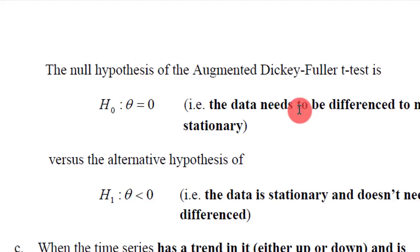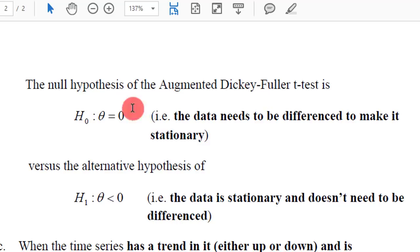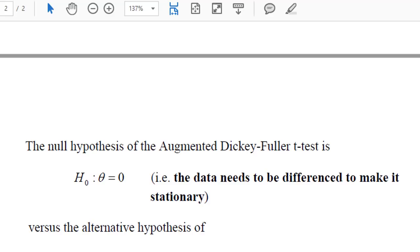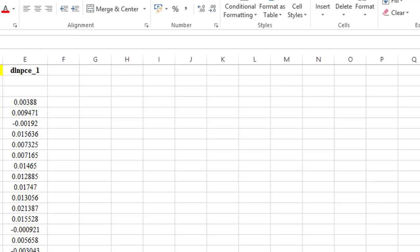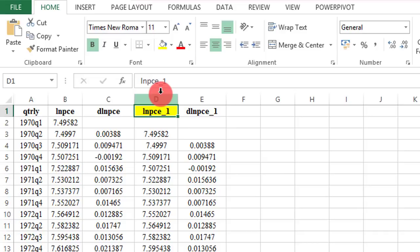The null hypothesis we are testing is that theta equals zero — that is, the data needs to be differenced to make it stationary — against the alternative hypothesis that theta is negative, meaning the data is already stationary and does not need to be differenced. Theta in this case is the lag of the dependent variable.